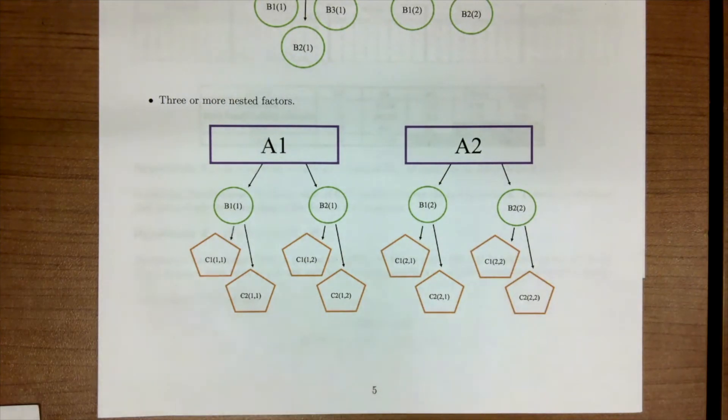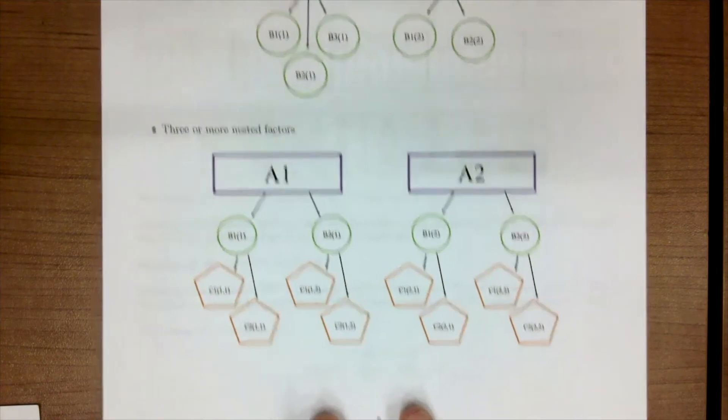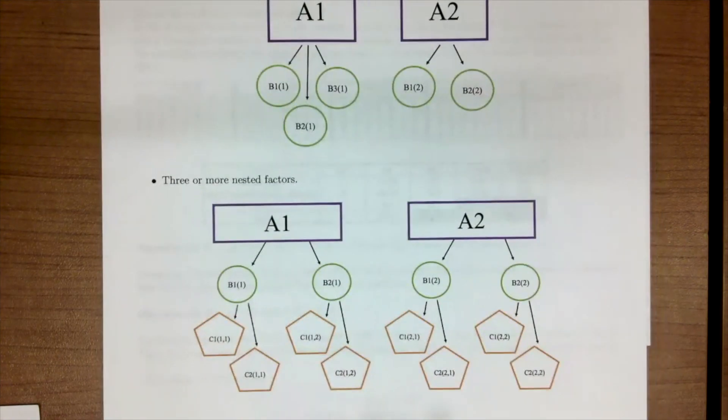So with the ANOVA table and understanding overall what's happening, we are going to now, in the next lesson, move to the machine head experiment example and see how it is done.